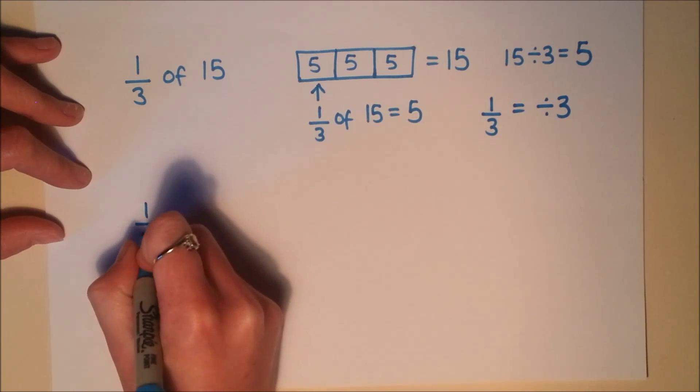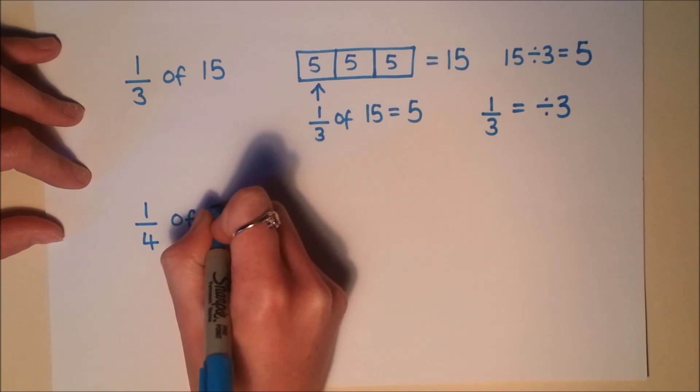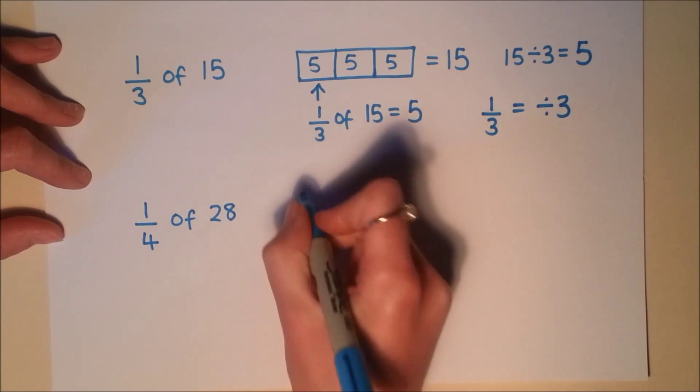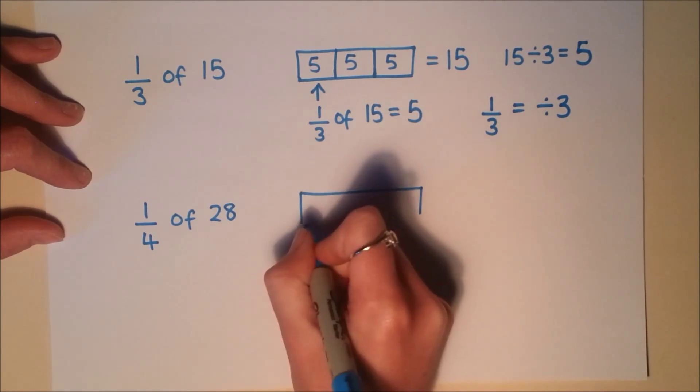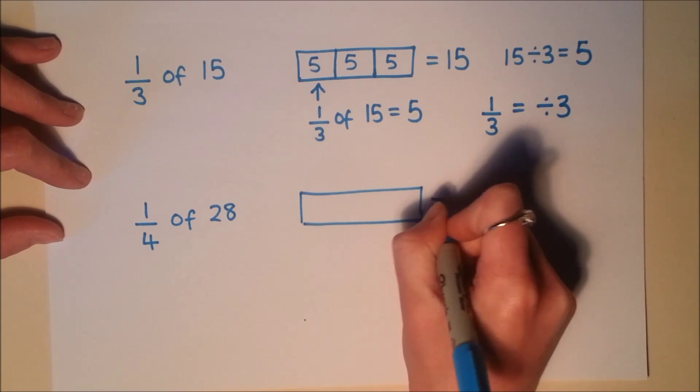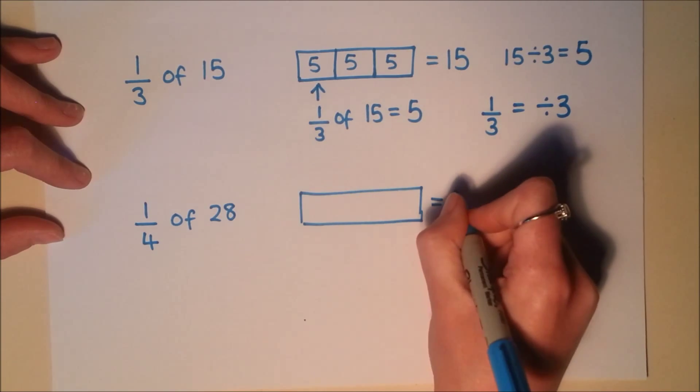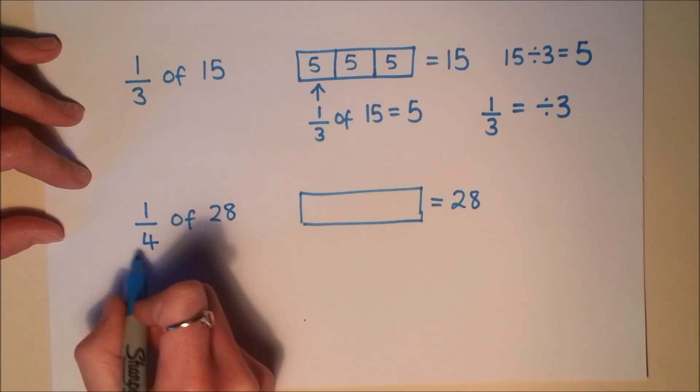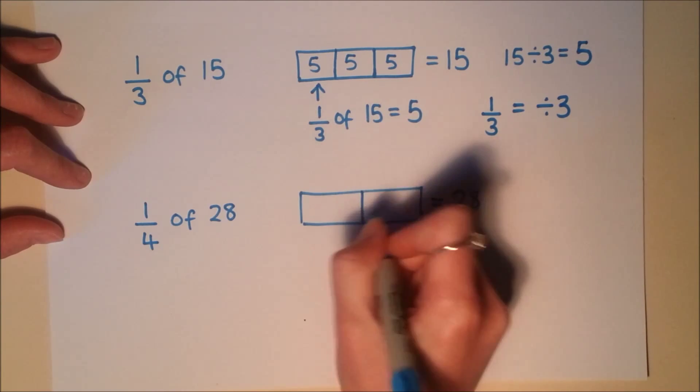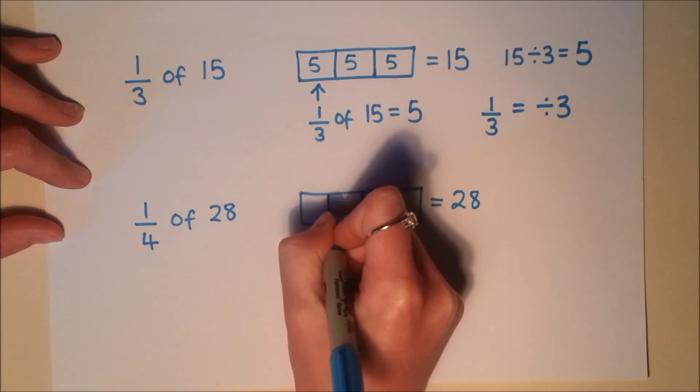Let's have a look at 1 quarter of 28. So again I'm going to draw myself a little rectangle to represent my whole amount. The whole amount is worth 28. The denominator is 4, so that means I'm going to be splitting into 4 equal pieces.